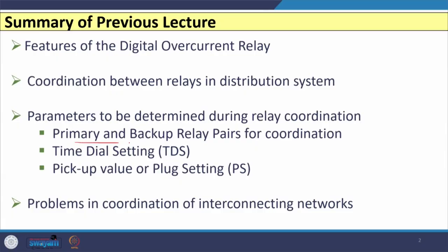Hello friends. In the previous lecture, we discussed the features of digital overcurrent relays and relay coordination in distribution networks. When carrying out this coordination among relays, we need to determine three important parameters: first, the primary relay and backup relay pairs (PRI and RBU); second, the time dial setting of the relay; and third, the plug setting of the overcurrent relay.